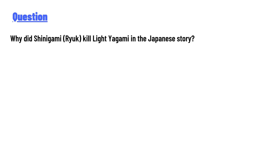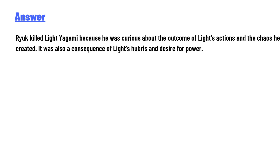Why did Shinigami Ryuk kill Light Yagami in the Japanese stories? The answer is: Ryuk killed Light Yagami because he was curious about the outcome of Light's actions